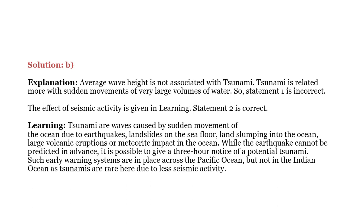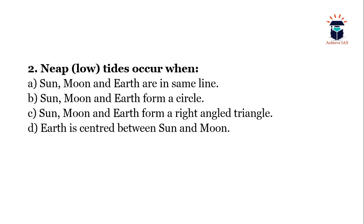Next question: Low tides occur when — A) sun, moon and earth are in the same line; B) sun, moon and earth form a circle; C) sun, moon and earth form a right angle triangle; D) earth is centered between sun and moon. Option A is wrong because when sun, moon and earth are in the same line, a high tide is created. Option B — a circle cannot be formed. Option D — earth is not centered between sun and moon. The answer is C: sun, moon and earth form a right angle triangle.